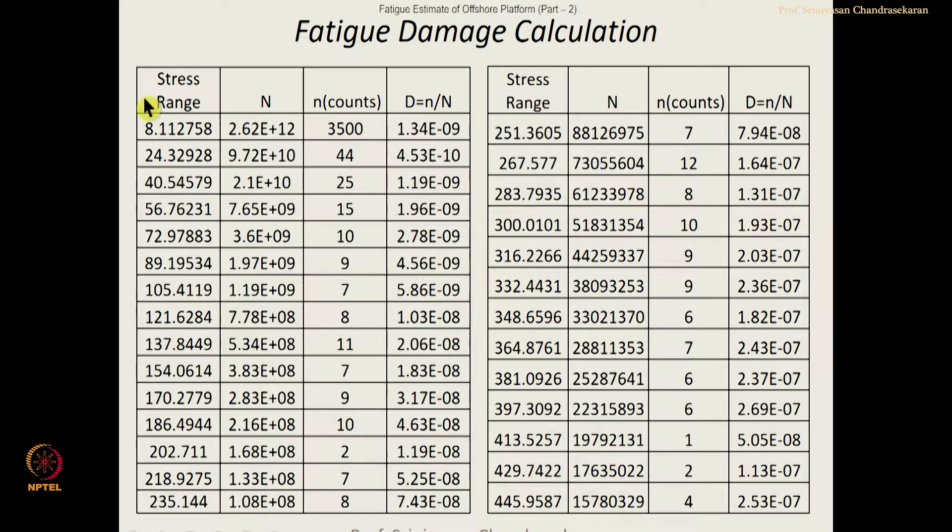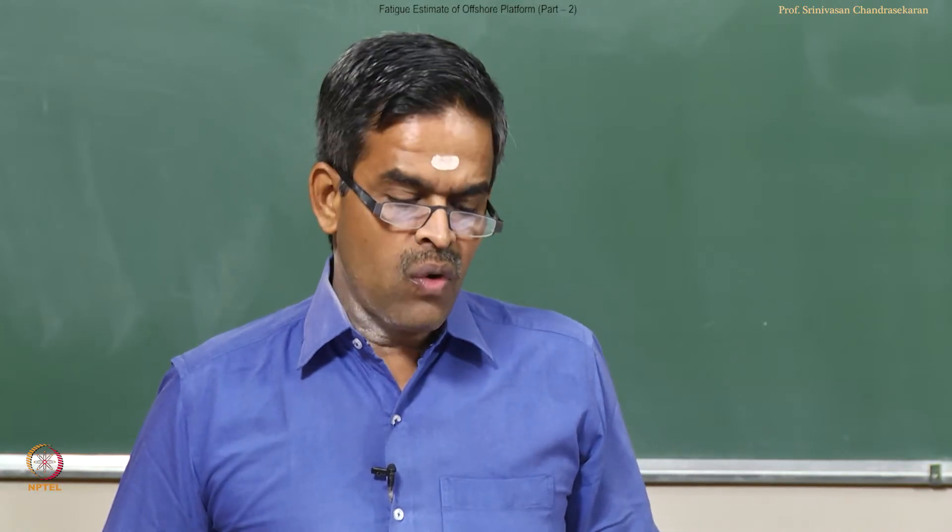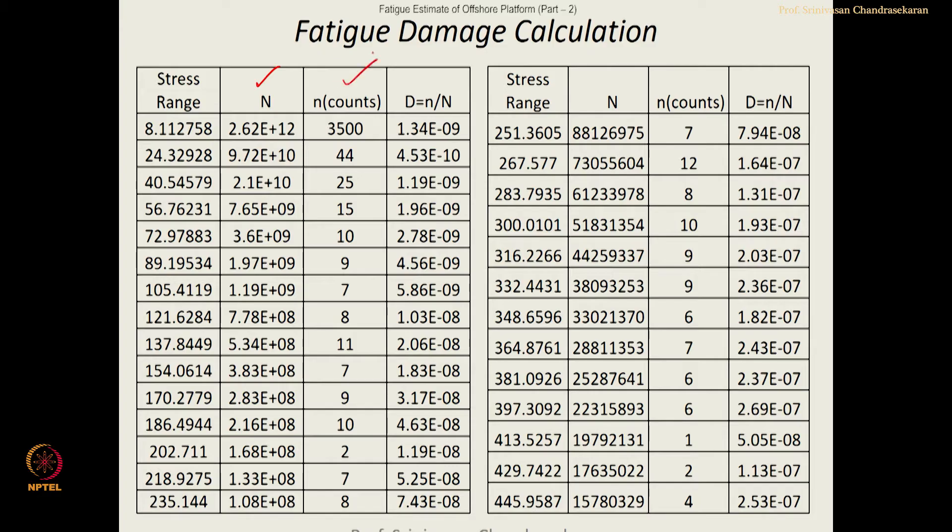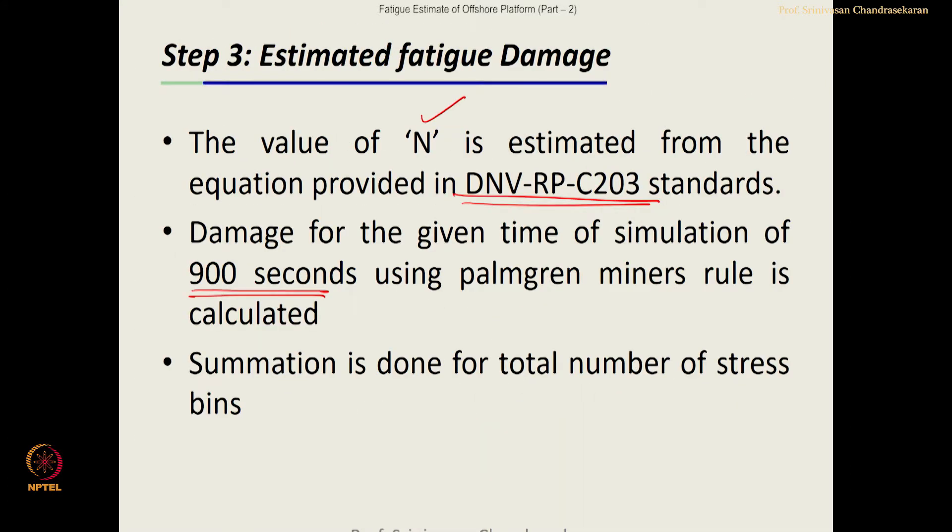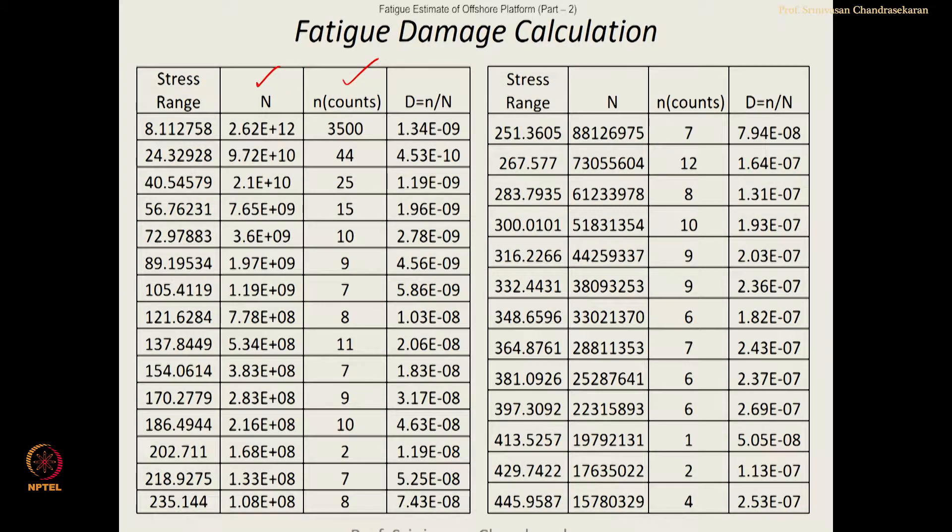For a given stress range, the N value is estimated using the equation given in the design code. The small n is actually the count of the stress bin which we calculated from the figure. For example, a specific stress range has a specific count which we calculated. The small n is available and based upon the capital N and small n, we found out D.